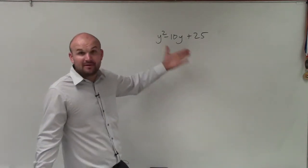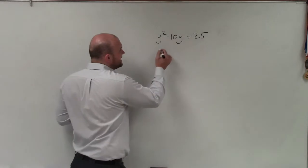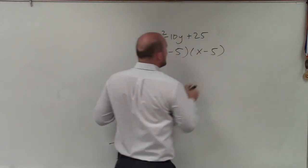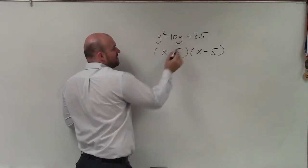Since it's negative, I know my factors have to be y minus 5 times y minus 5. Negative 5 times negative 5 gives me 25.